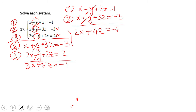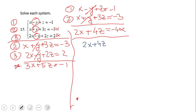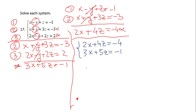Now let's take these two resulting equations and put them together. We have a system of two equations in two variables. Again, we use elimination by multiplication. I'm going to eliminate x, so I'll multiply the first equation by negative three and the second one by positive two.